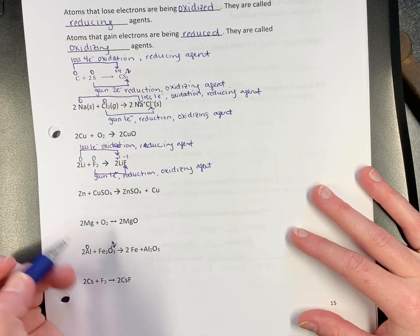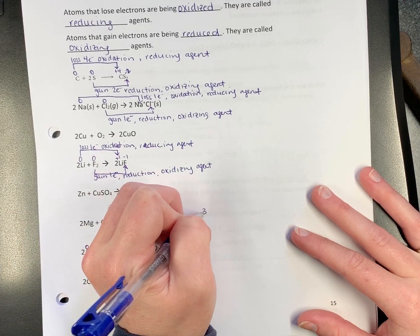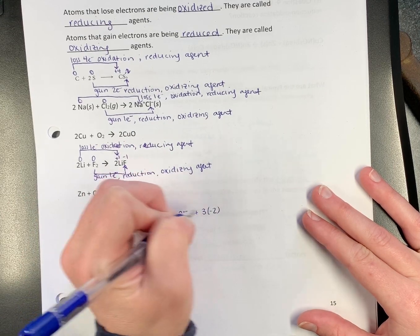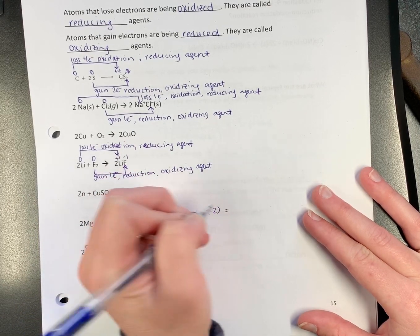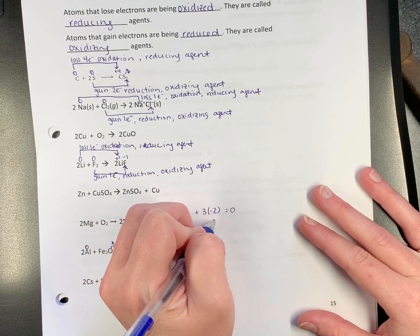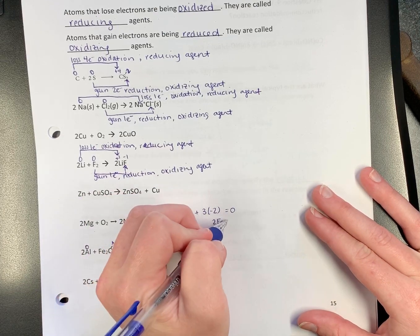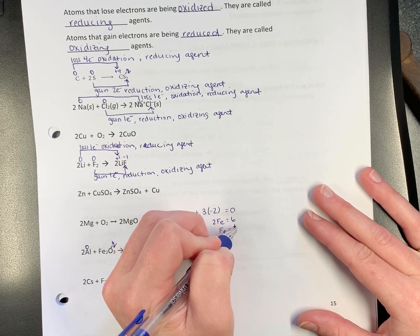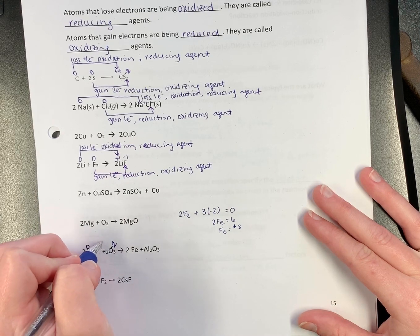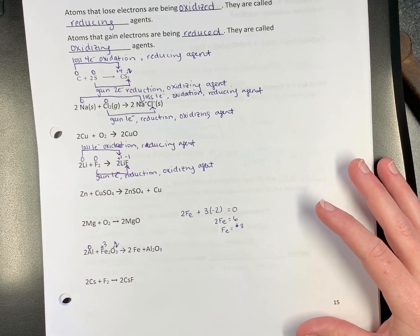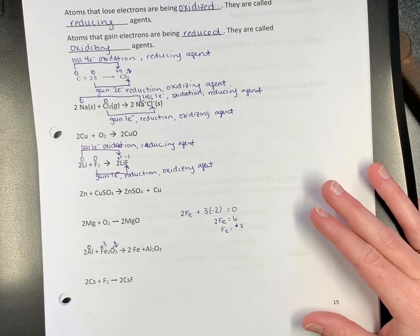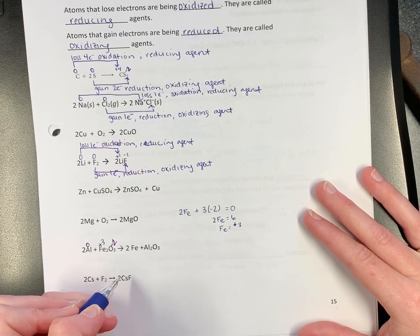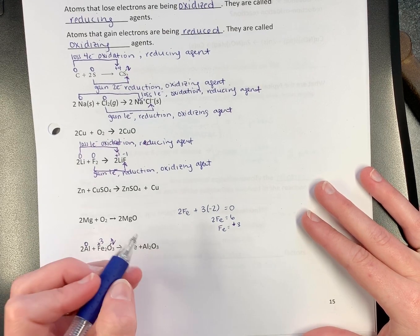So if we have three of them. So here we can kind of go over here. Three times negative two plus two times iron equals how much? Zero. Zero because it's neutral. So two irons equals six. So iron is plus three.